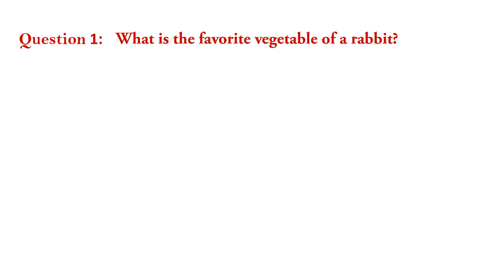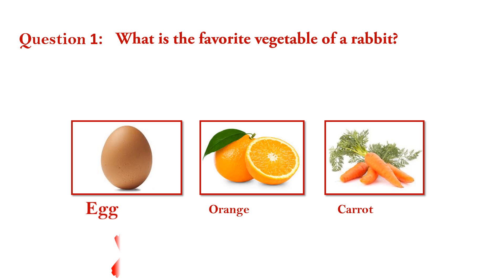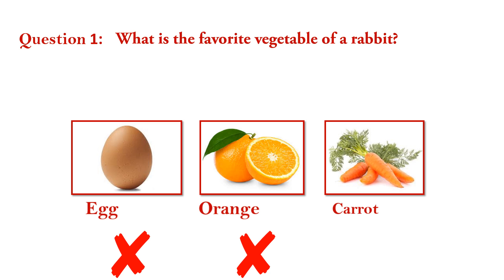Question number 1. What is the favorite vegetable of a rabbit? Egg — wrong. Orange — wrong. Carrot — right. Answer is carrot.